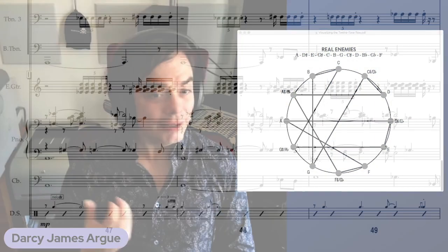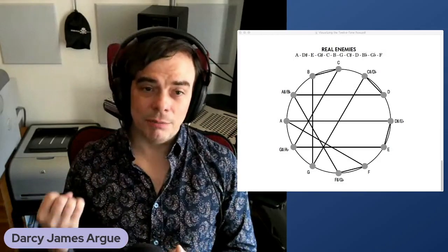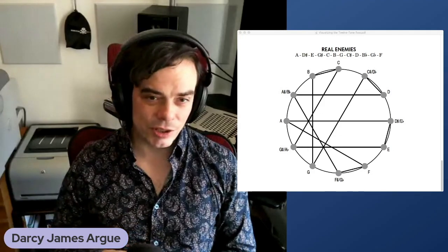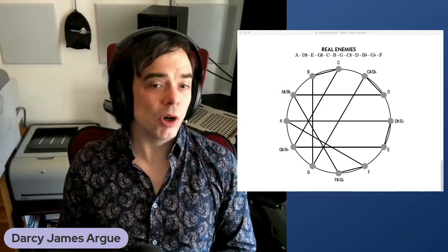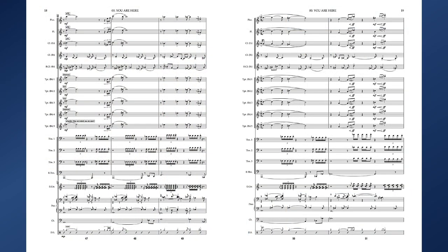You're going to hear this row a number of different ways. You're going to hear it in the piano ostinato. You're going to hear it in the melody played by Ingrid Jensen on trumpet and Sam Satigurski on clarinet. And you're going to hear it in the trombone comping figures underneath the melody. So I hope you enjoy. Let's listen to a little bit of You Are Here.